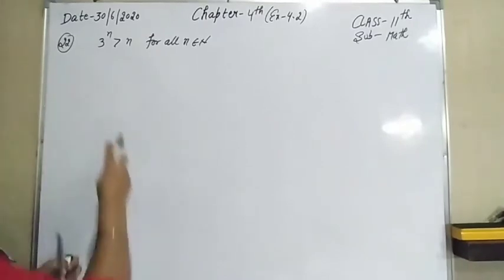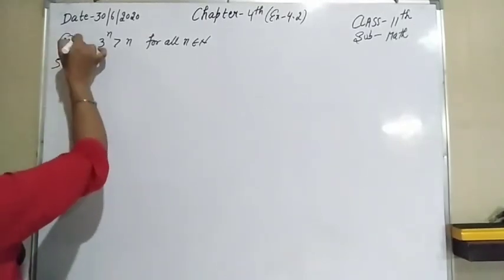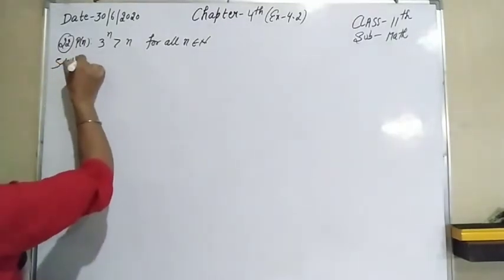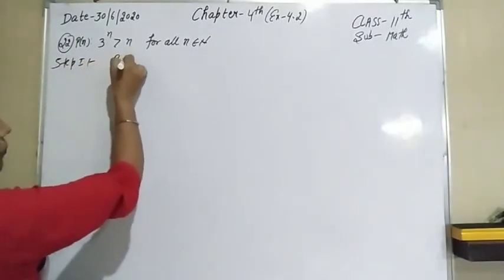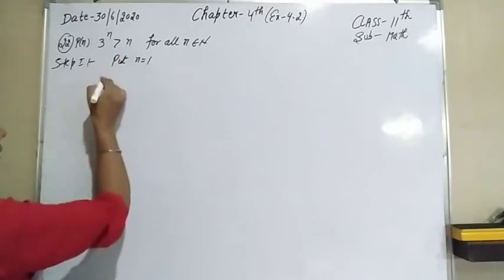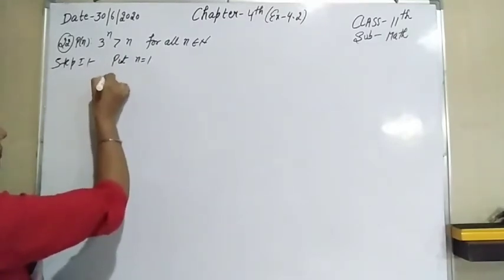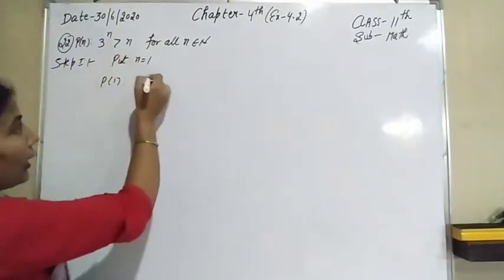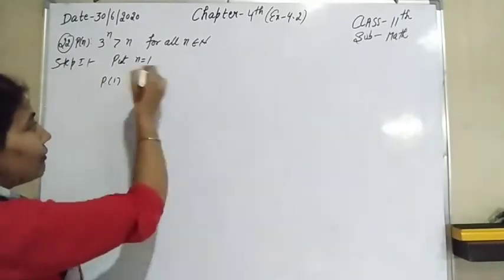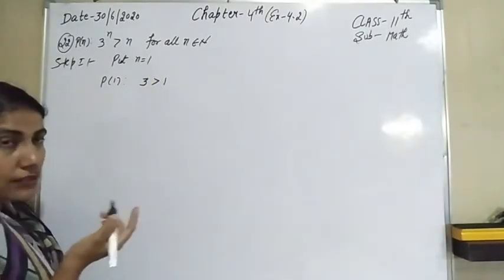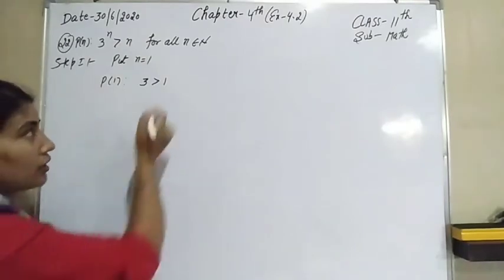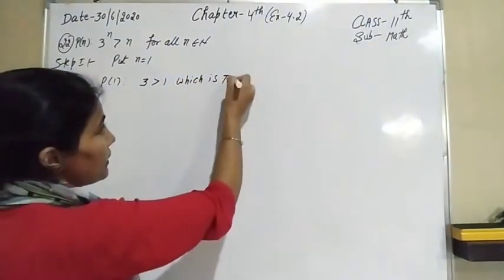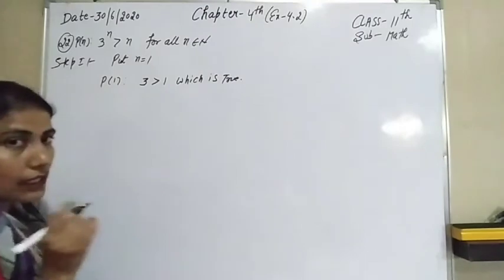So in the first step, let P(n) be this statement. In Step 1, we put n equal to 1. So P(1) is the statement: 3 raised to the power 1, that is 3, is greater than the value of n, which is 1. And obviously 3 is greater than 1, which is true. So the result is true for n equal to 1.